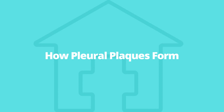When asbestos fibers are inhaled into the pleura, they get stuck in the body and irritate the surrounding tissues. The pleura can become inflamed, and the tissue damage causes the immune system to react.